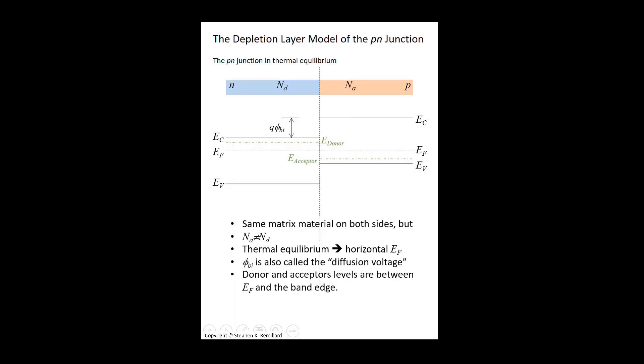Donor and acceptor levels are shown in this diagram. The donor level resides somewhere between the Fermi band and the conduction band edge. That difference between where this dash-dot green line is and the conduction band edge is the ionization energy for donor atoms. It's the energy that it takes to remove an electron from it. Normally, the ionization energy of these dopants is very small in the environment of the semiconductor.